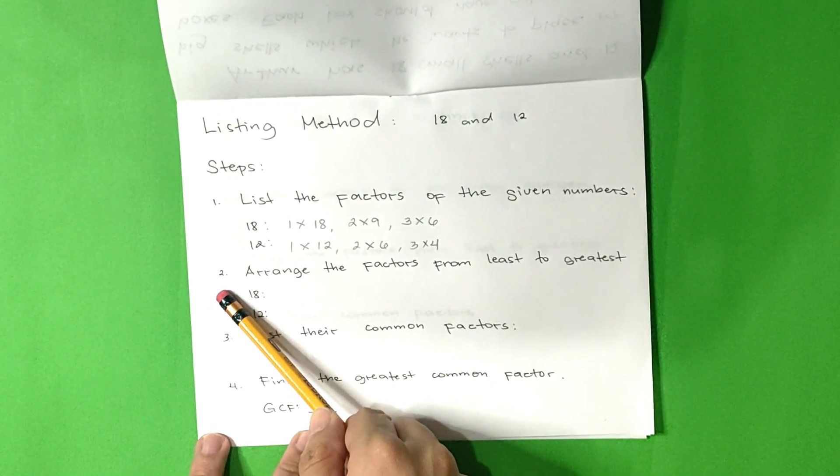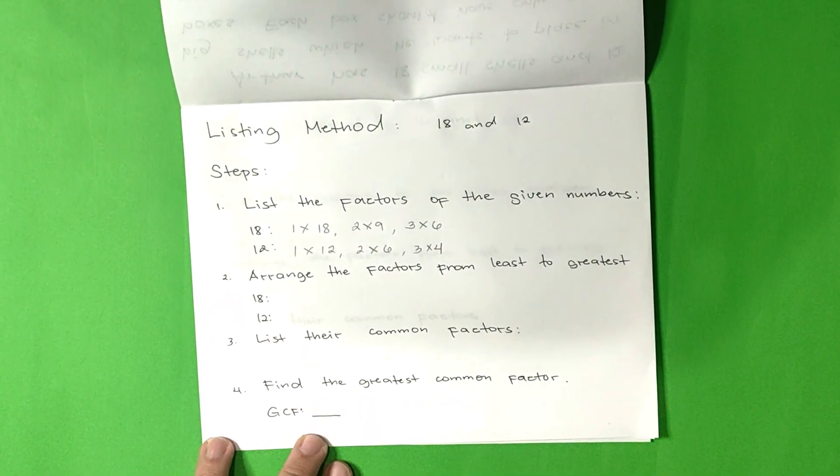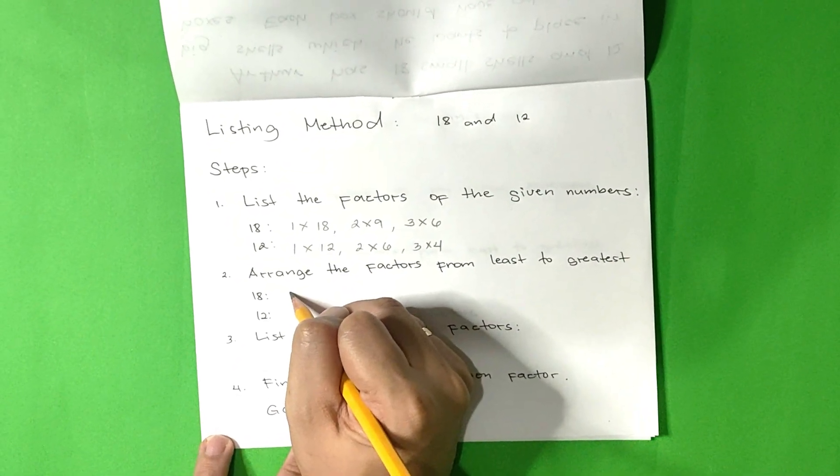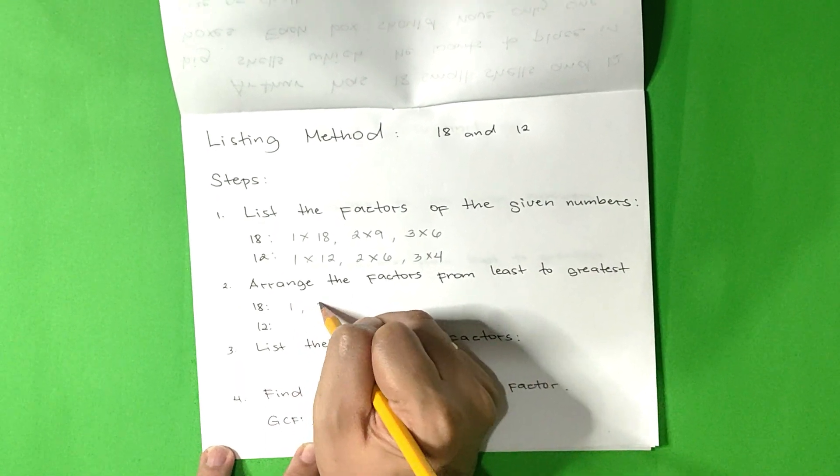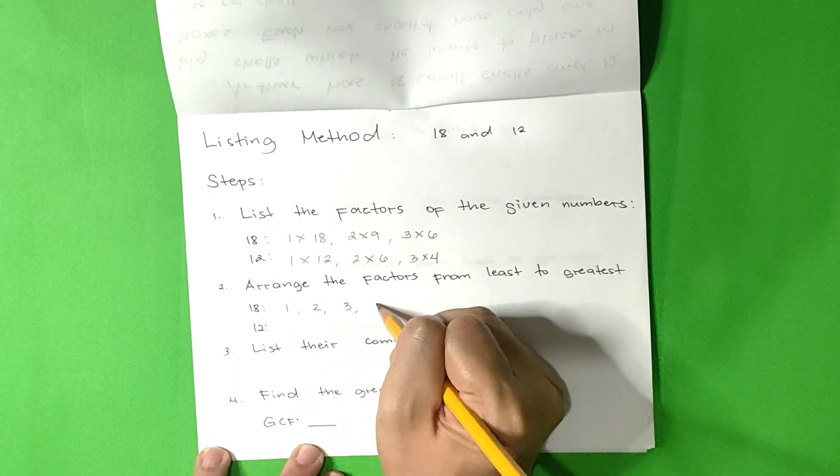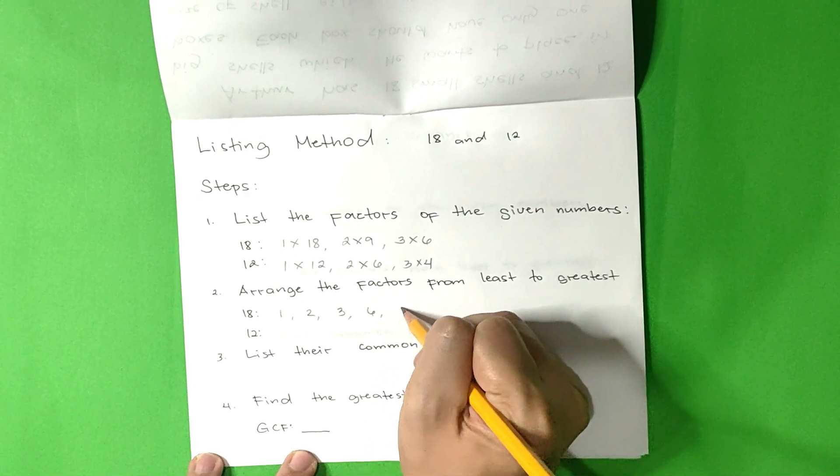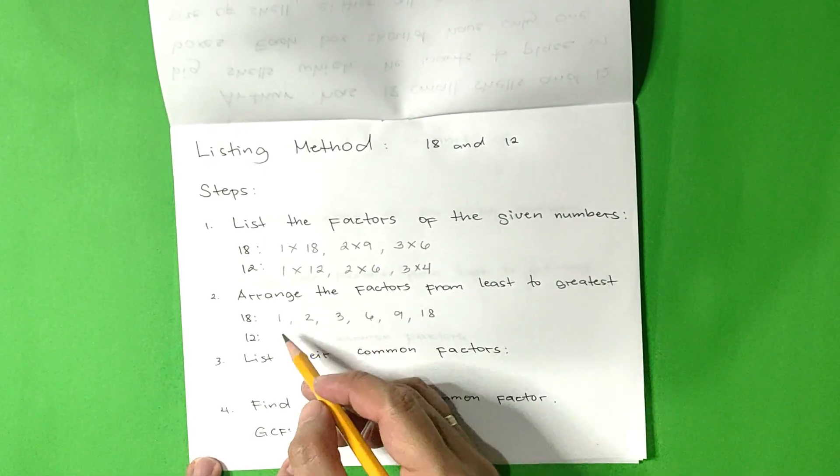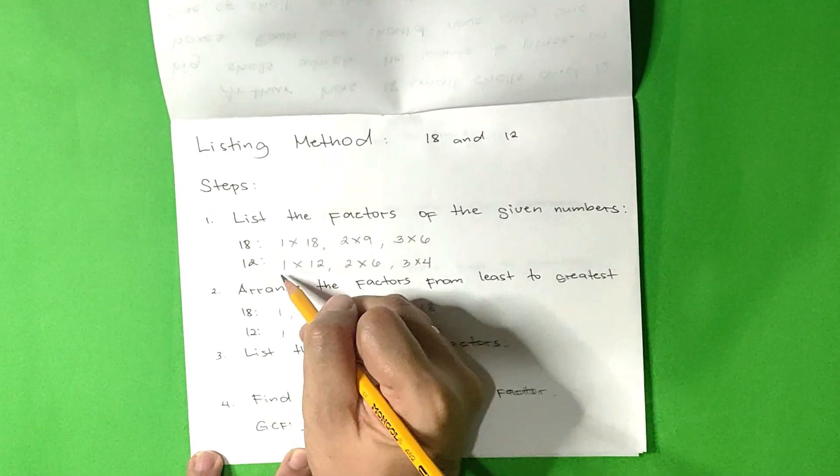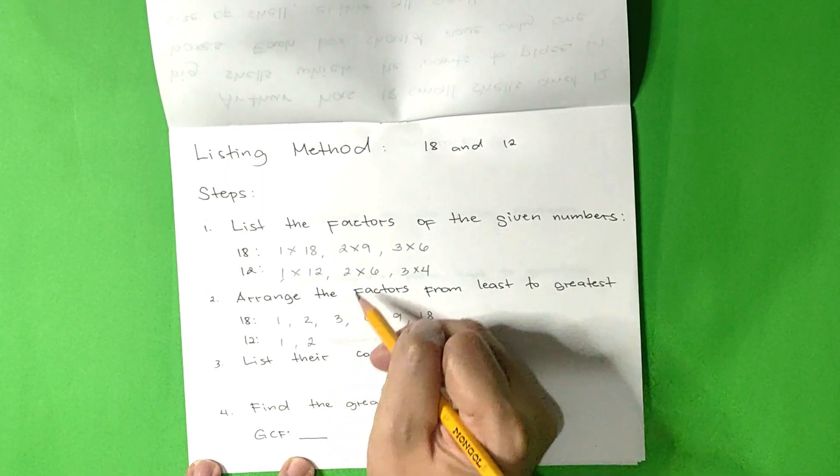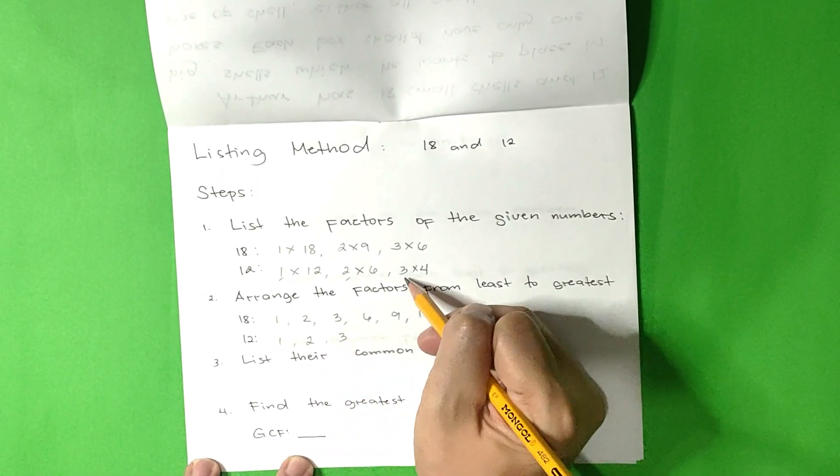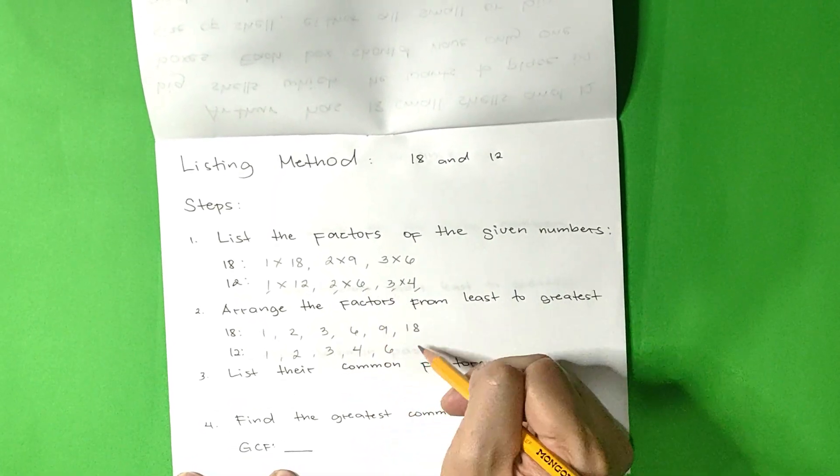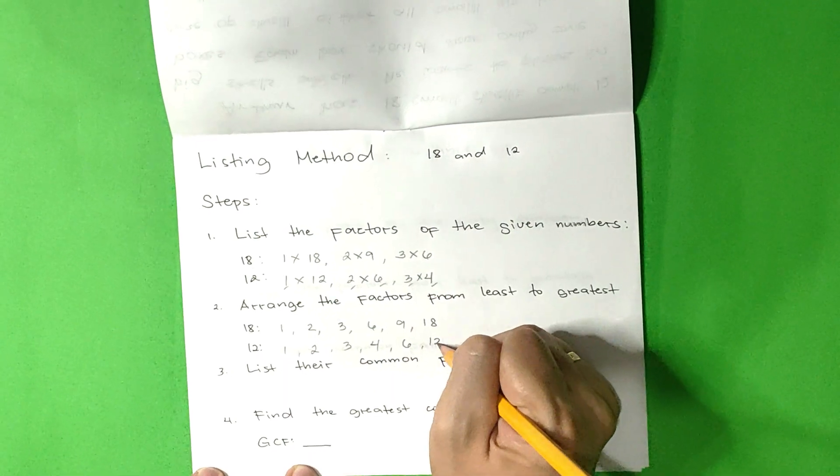Step 2: Arrange the factors from least to greatest. Number 18: 1, 2, 3, 6, 9, and 18. Number 12: We have 1, 2, 3, 4, 6, and 12.